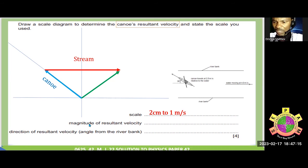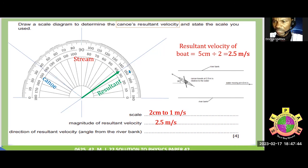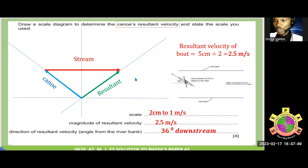Now, we need to find out the magnitude of the resultant. Get your ruler and measure the length. Which is 5 cm. Divide it with this scale. 5 cm divided by 2, will give you 2.5 meters per second. That is the speed of the canoe. 2.5 meters per second. Then, the next thing we need to find out is the direction with respect to the river bank here. What is the angle here? Take your protector and measure it. We have 30, 35, 36 degrees downstream.